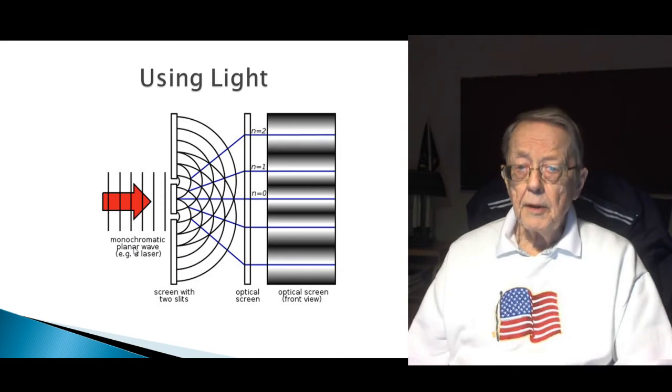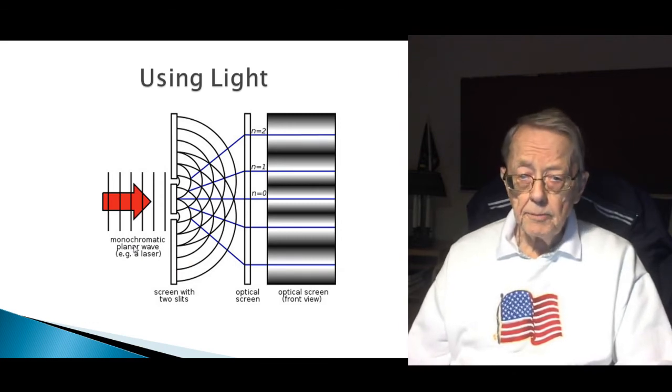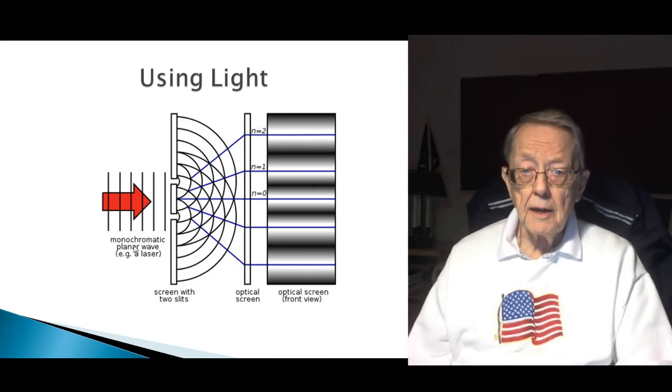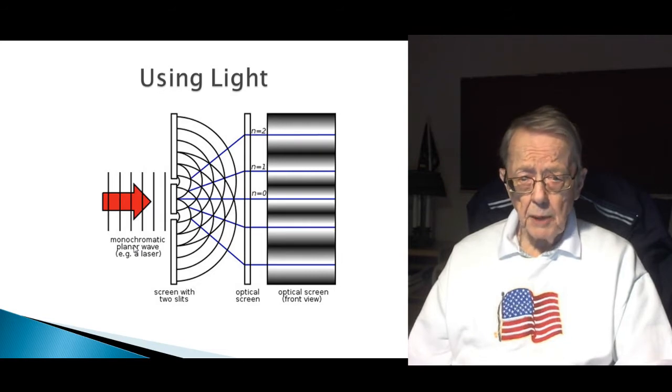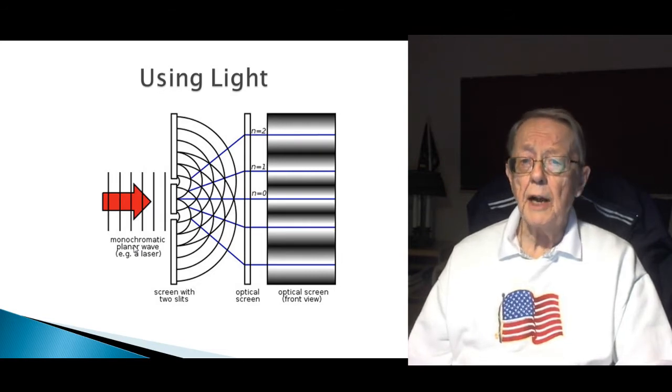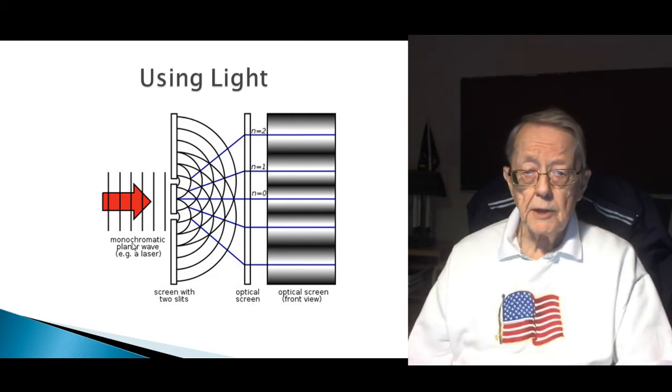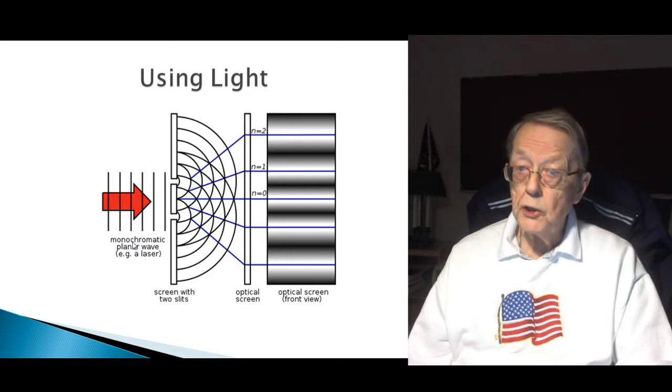Now, one of the things that Professor Al-Khalili shows up front is that when you shine light through a double slit, you get the interference pattern. We've discussed this. This is nothing new, but that's using light.